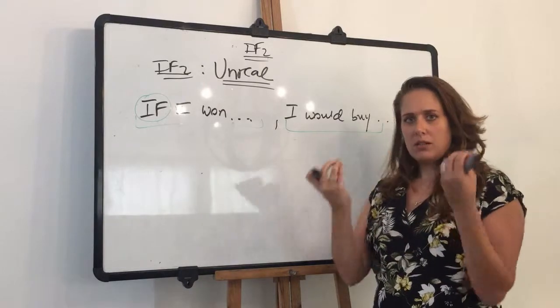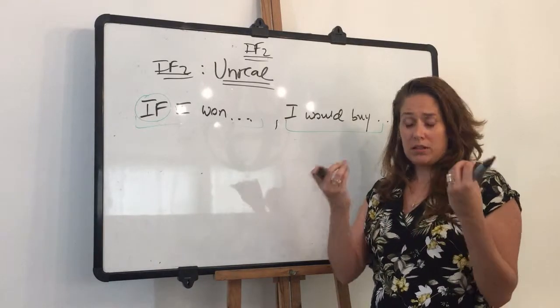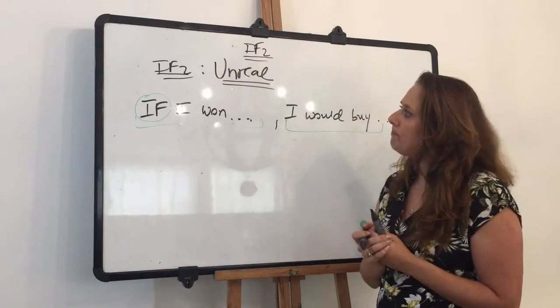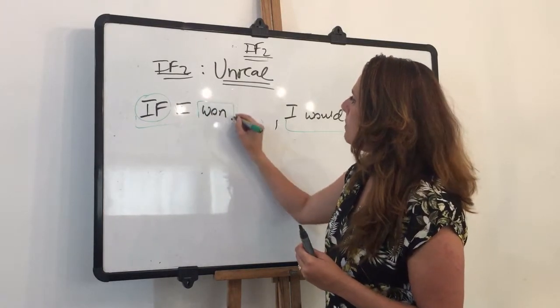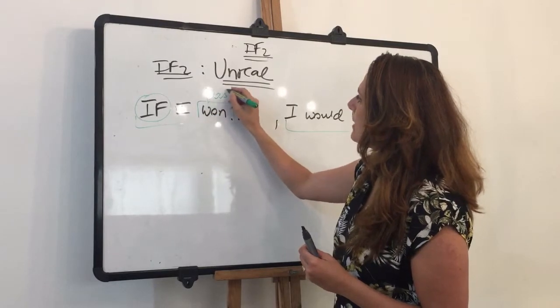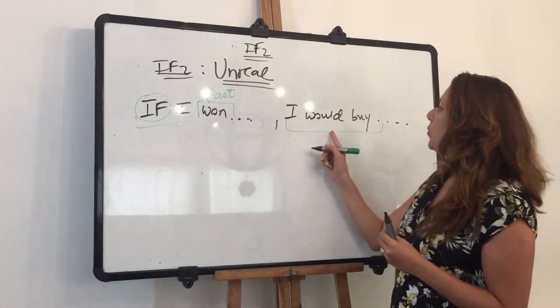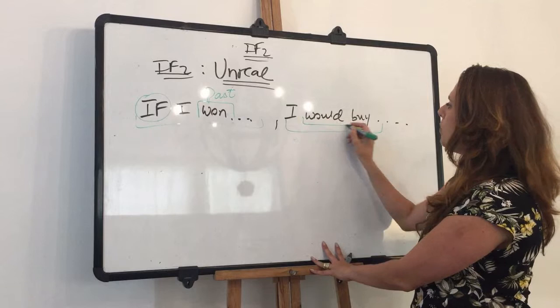Let's take a look at the structure, the grammatical structure. If, the if word. I won. That would be past. Past simple. I would buy, the result, I would buy. That would be the past of will.